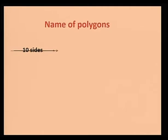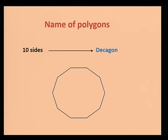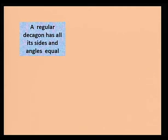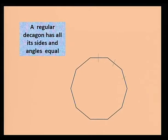A polygon with ten sides is called a decagon. Here is a decagon. Students, can you tell me how do we call a decagon with all the sides and angles equal? Yes — a regular decagon. A regular decagon has all its sides and angles equal, as you can see here.